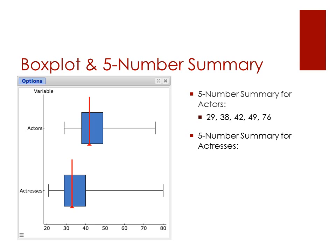Now use the same process and go through to get the values for actresses. Pause the video while you do that, and when you have your answers let's proceed to the next one together and check it. You should have gotten: 21, 29, 33, 40, and 80.